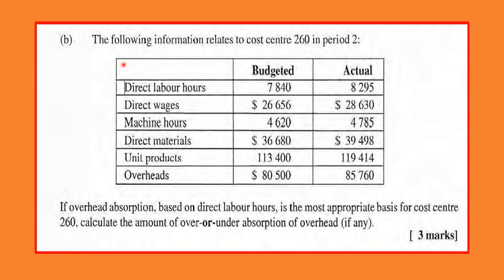We are given some information which relates to cost center 260 in period 2. We have direct labor hours and the overheads, along with some other extraneous information. Since overhead absorption based on direct labor hours is the most appropriate basis, we're going to use direct labor hours as the base. We are also required to calculate the amount of under or over absorption of overhead.